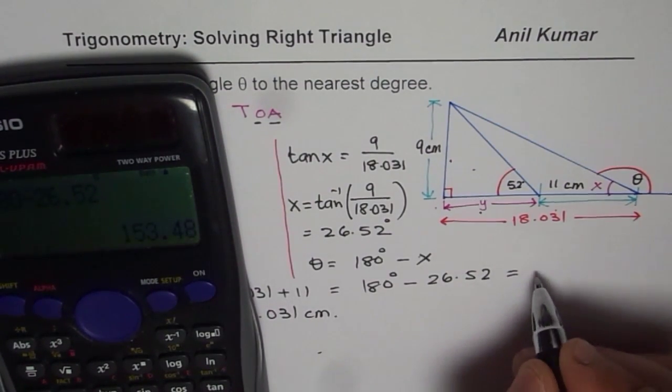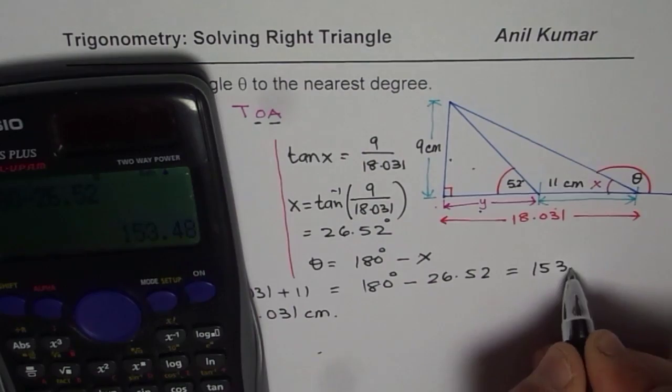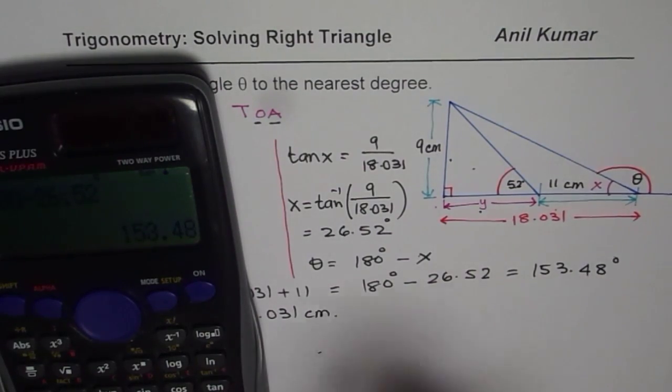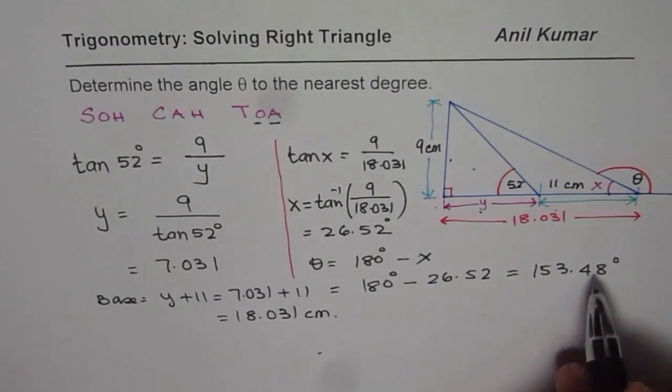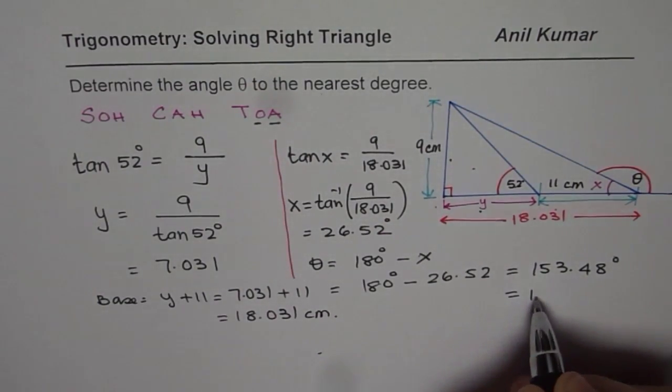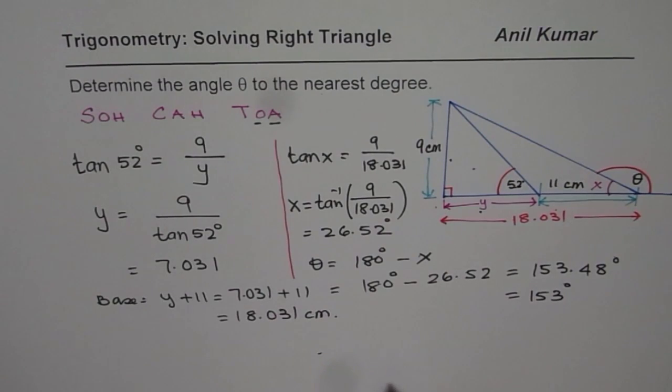In decimal, it gives us 153.48 degrees. Since we have to report the angle in nearest degree, we should round it. So it is 153 degrees as our answer.